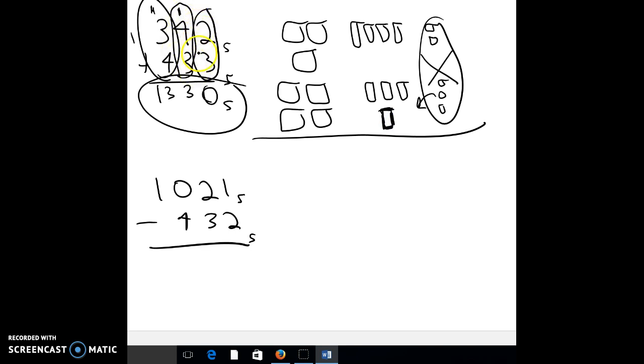So then remember, we added the 4 and the 3 and the new one, which was 8. But remember, we regroup when we hit 5. So we're going to take 5 of these, and we're going to regroup into a flat. And notice how many were left over. 1, 2, 3.